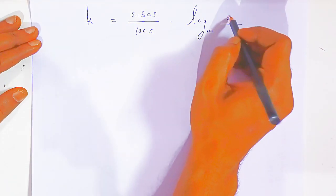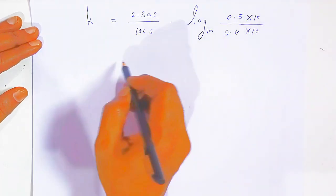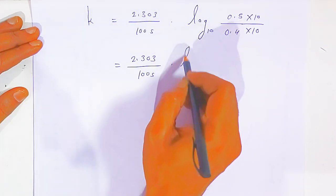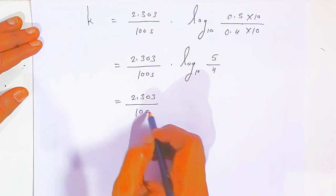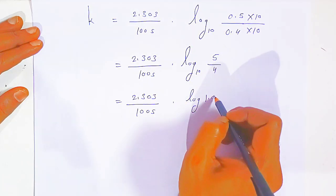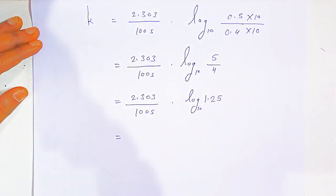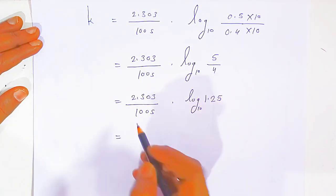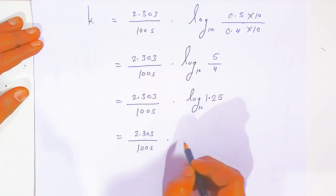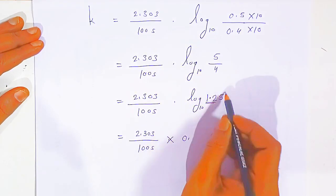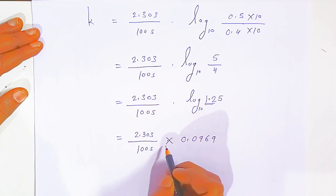Dividing 5 by 4 gives 1.25, so we need log₁₀(1.25). The characteristic is 0 (one digit before decimal, so 1 − 1 = 0). Looking up 12 in the log table in the fifth column gives mantissa 969, so log(1.25) = 0.0969.